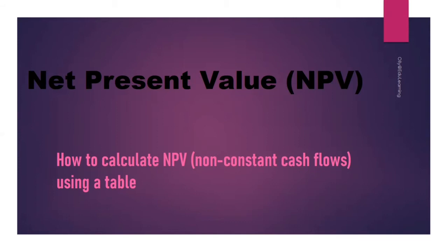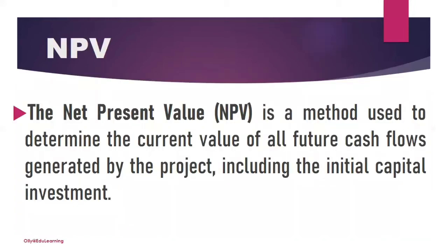NPV is a term used in capital budgeting. We are going to look at how to calculate NPV with non-constant cash flows using a table. Non-constant cash flows means you are given different cash flows in different years, as opposed to constant cash flows where the same amount is given throughout all the years. Today we focus on non-constant cash flows.